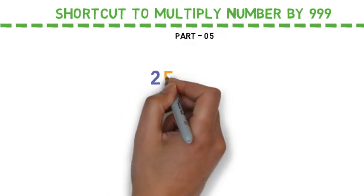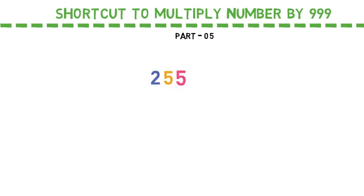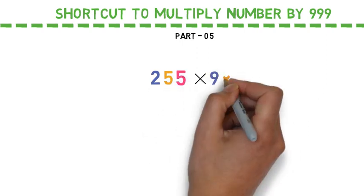Let us consider a number 255 and let's say if I'm supposed to multiply this by triple nine.